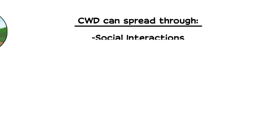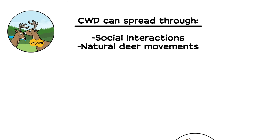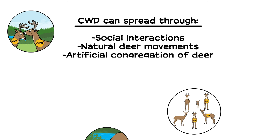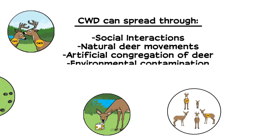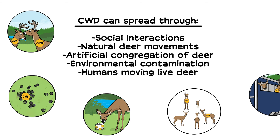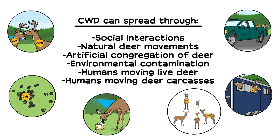CWD can spread in many possible ways, including social interactions between deer, natural deer movements, artificial congregation of deer, contamination of the environment with prions, and human movement of deer and deer carcasses.